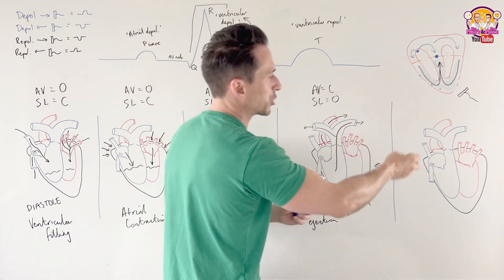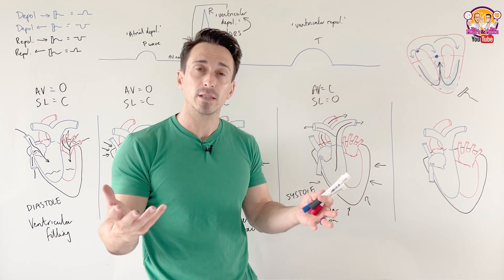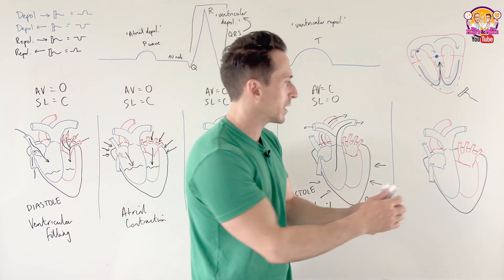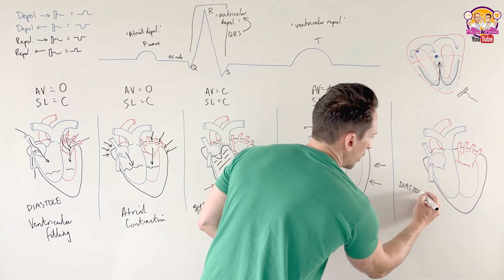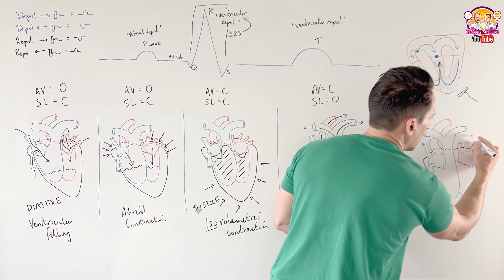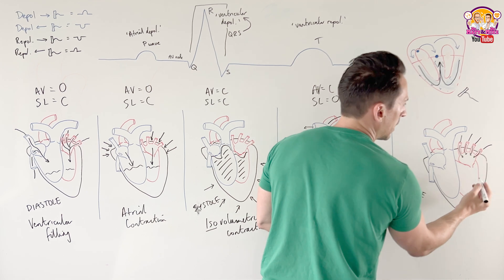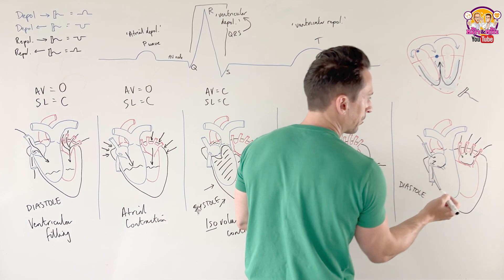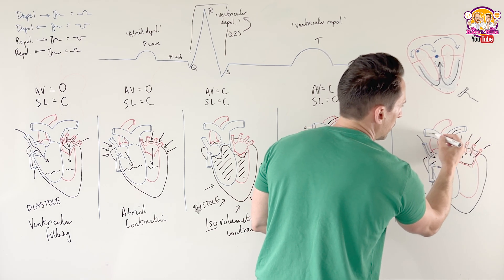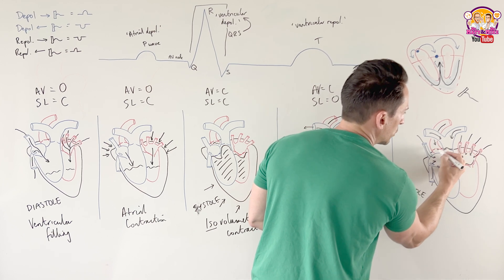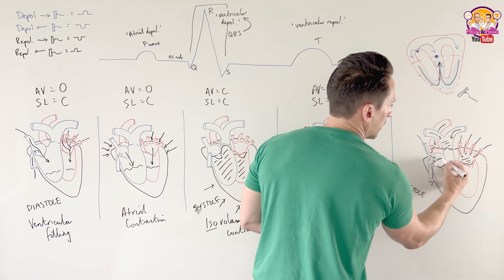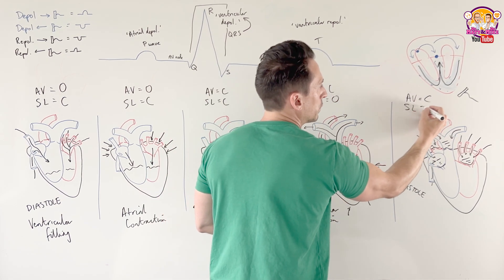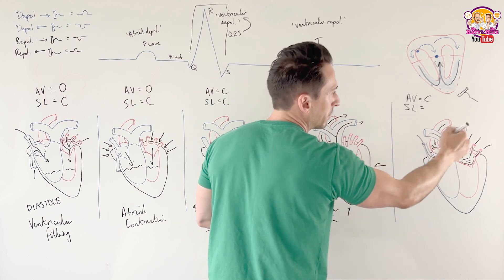After ventricular ejection, we return to diastole — relaxation. Blood is now entering and filling the atria. The blood that didn't fully eject wants to fall back down and closes the semilunar valves. The AV valves are still closed because blood hasn't entered them yet, and the semilunar valves now close as well since they don't let blood fall back down. This phase is called isovolumetric relaxation.